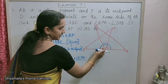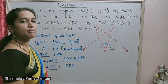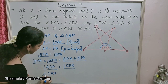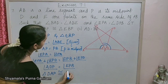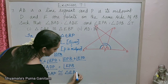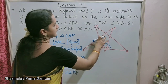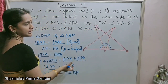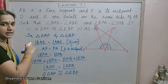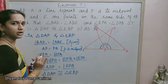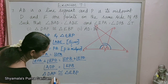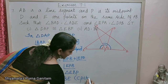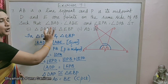Two angles and one side are equal, so by ASA congruence, triangle DAP is congruent to triangle EBP. They also asked us to show AD is equal to BE. Since these are corresponding parts of the two congruent triangles, by CPCT we can say AD is equal to BE.